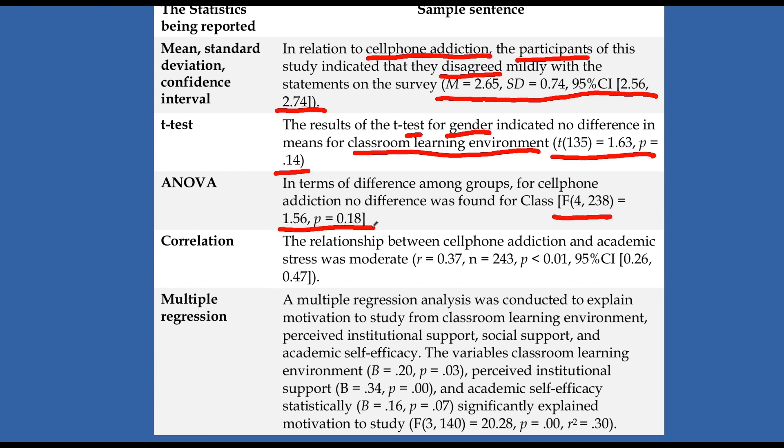For correlation, you can see here, I have cell phone addiction and academic stress. Those are the two variables I'm looking at. And I give you the interpretation of the strength of the relationship. And then here are all of the results for the correlation. So correlation was 0.37. Then the sample size, the significance, et cetera. Again, the statistics is something you should be familiar with, or you should look for other videos.